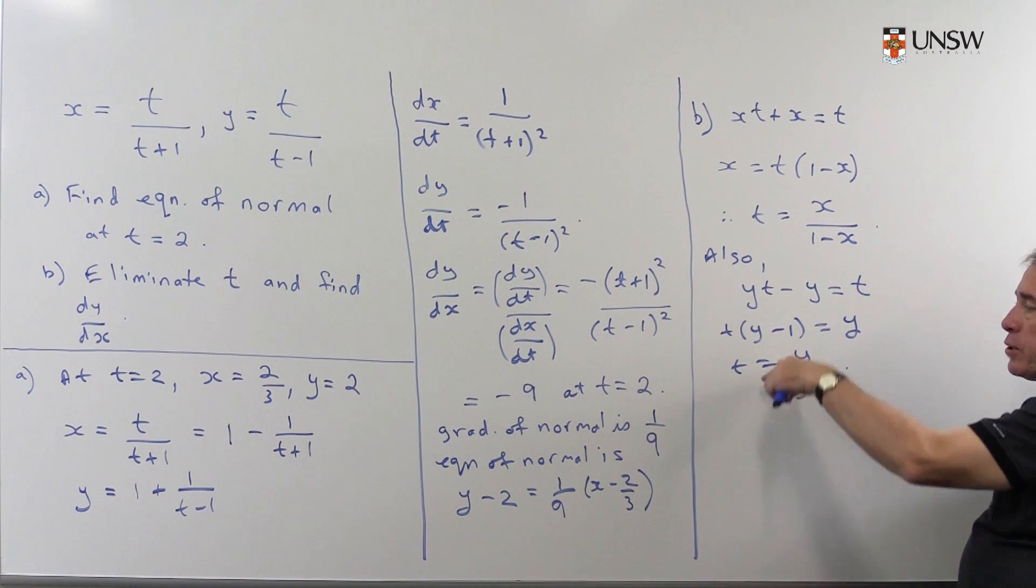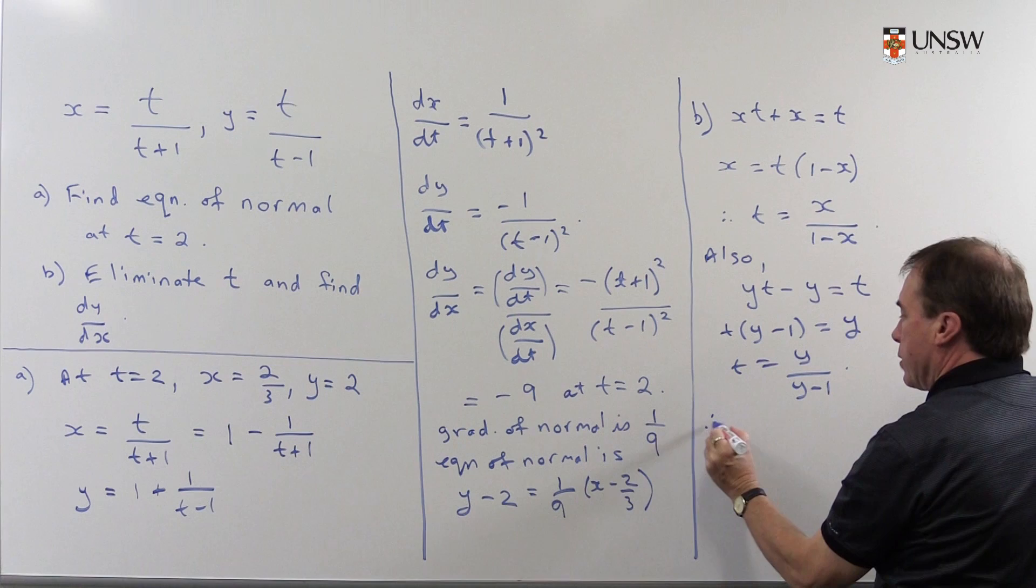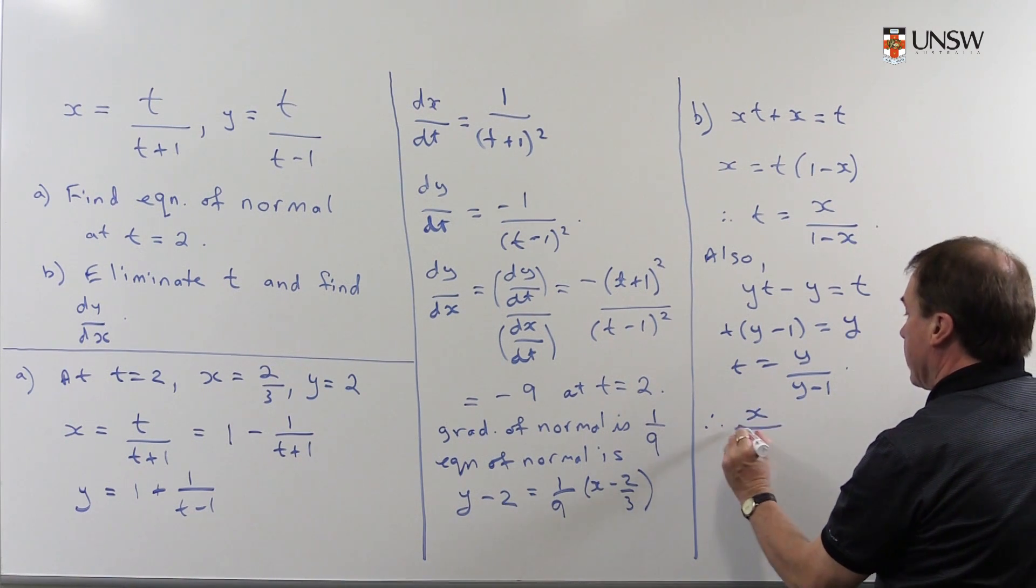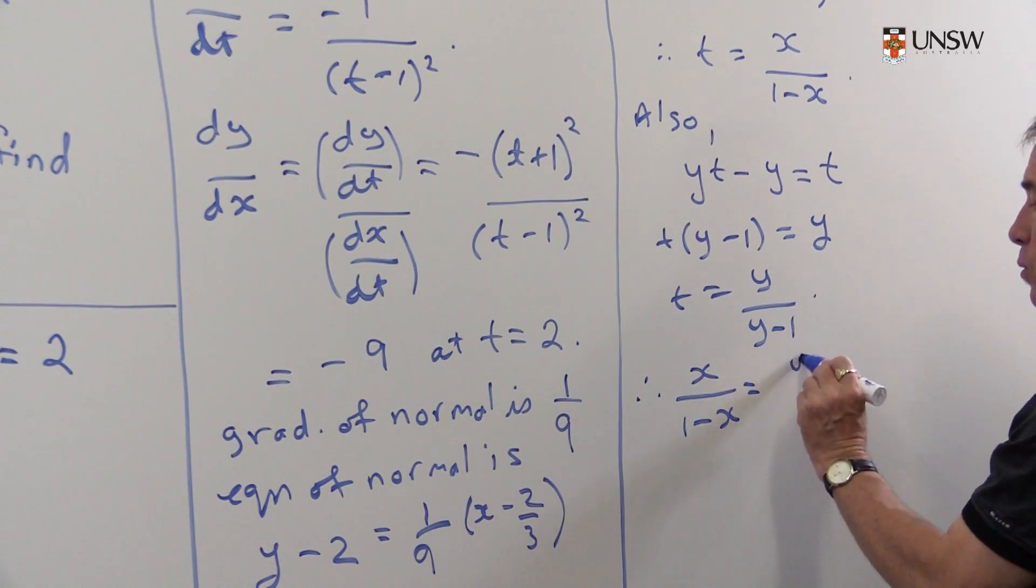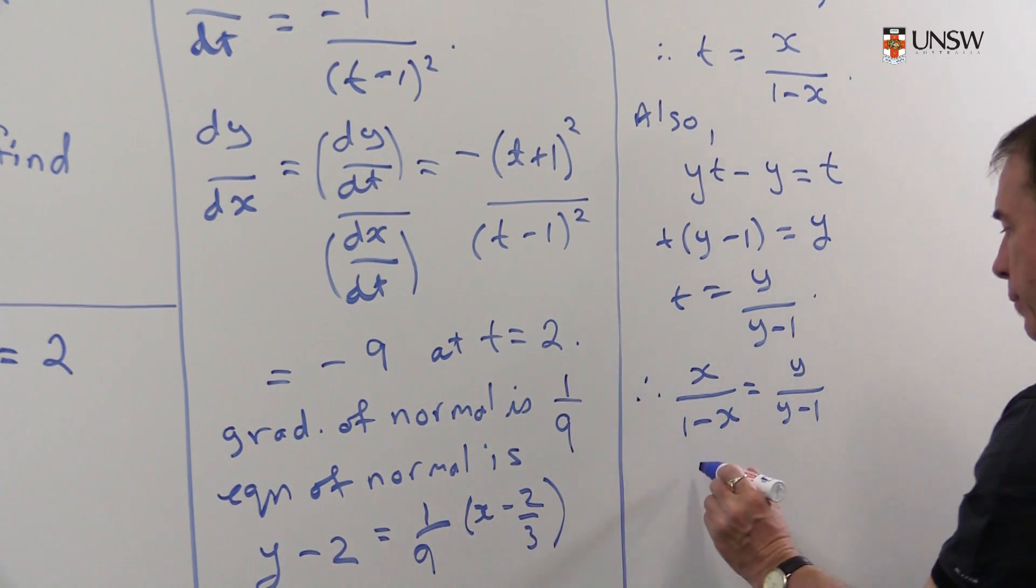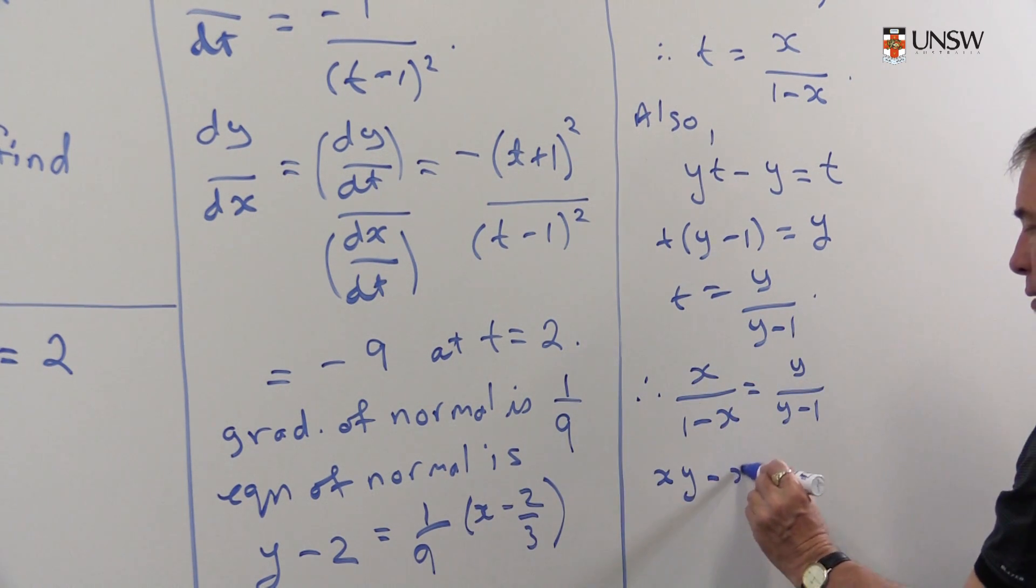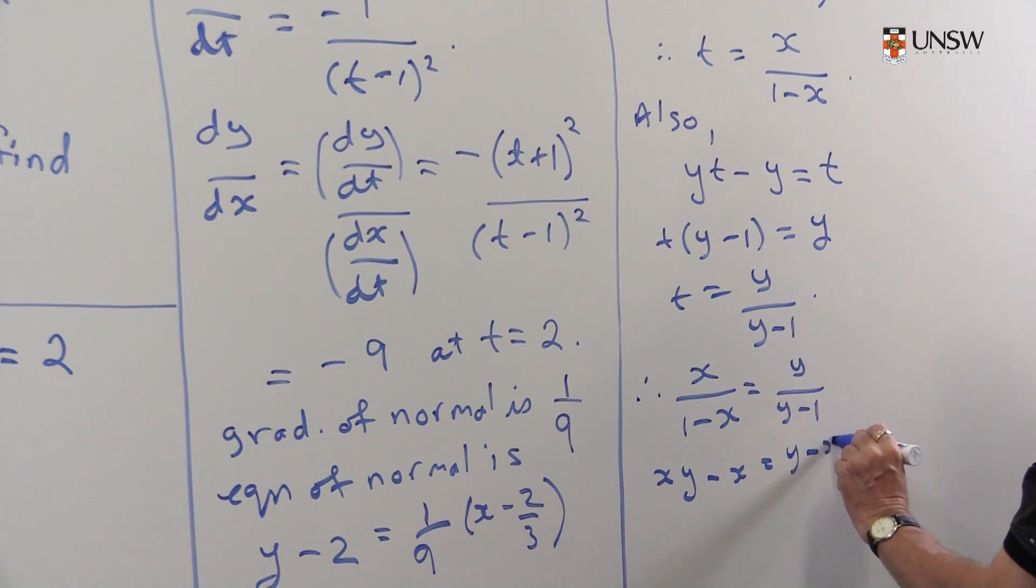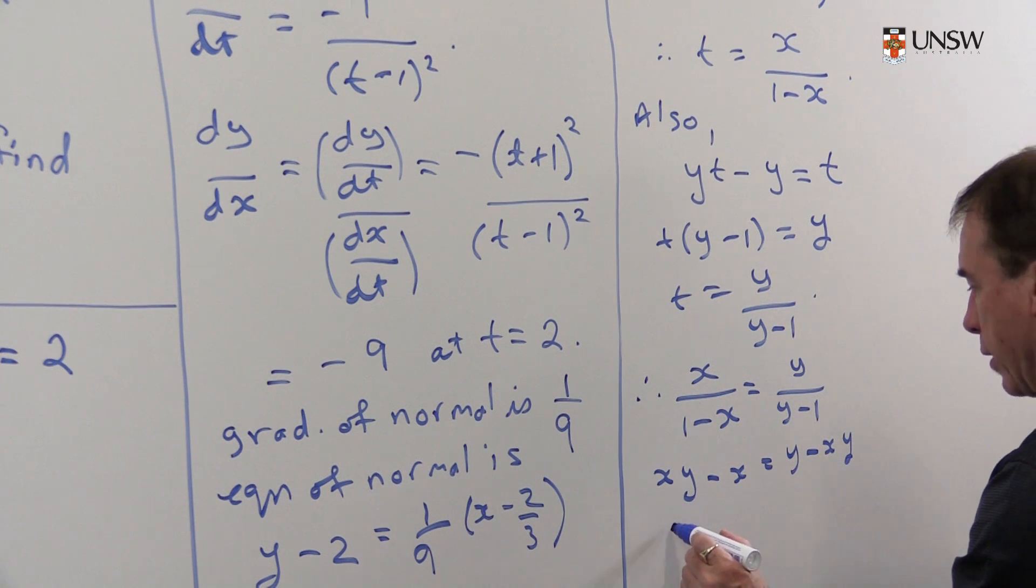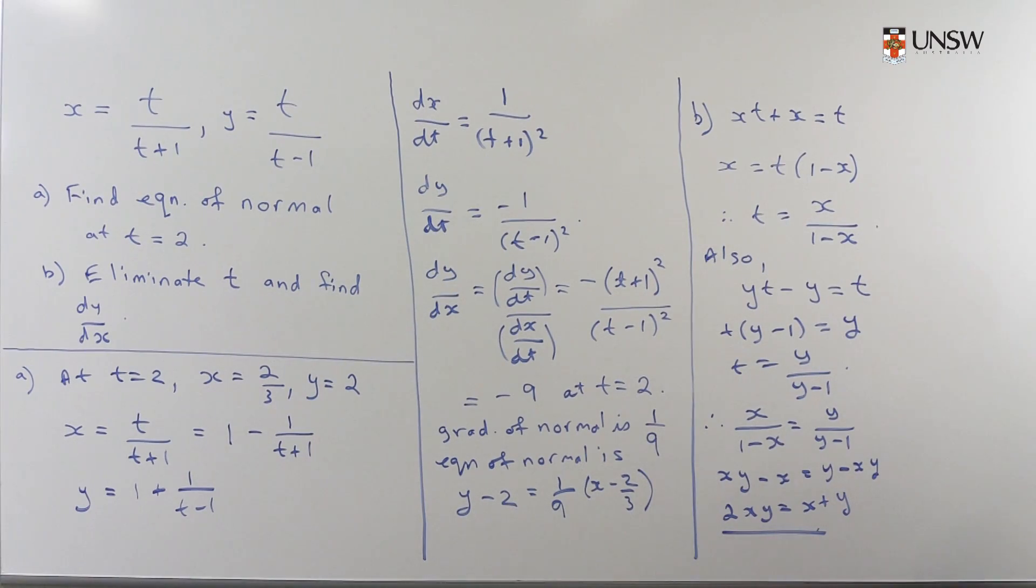Now that I've got t in terms of x's and y's, I can now eliminate t by equating those. So therefore, I can say x over (1-x) is equal to y over (y-1). And I can cross multiply. And so I get xy minus x equals y minus xy. And I probably want to just rearrange this a bit and write this as 2xy equals x plus y. So I've eliminated t at that point.